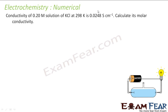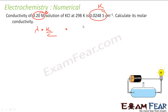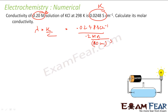The last question: given conductivity k = 0.0248 S/cm for a 0.2 mol/L solution, find molar conductivity. Using λm = k/c, where c = 0.2 mol/L = 0.2/1000 mol/cm³, we get λm = 0.0248 / (0.2/1000) = 124 S·cm²/mol.